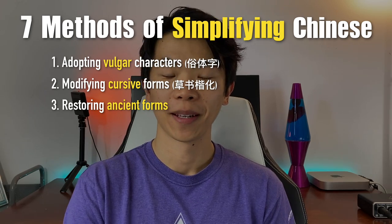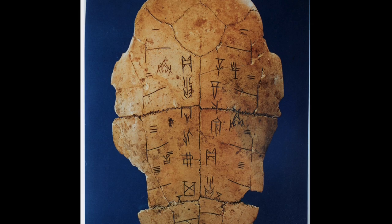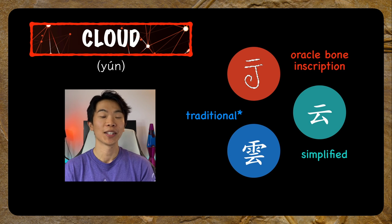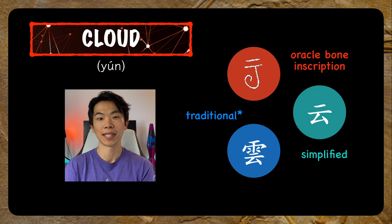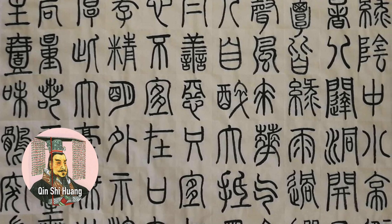The third method of simplifying Chinese is to simply take the ancient forms. This may sound ironic, until you realize that Chinese characters didn't just get simpler throughout history — sometimes they got harder. One such example is the 云 (cloud) character mentioned in the introduction. Even in the oracle bone inscriptions, the earliest form of Chinese characters that can be traced directly to modern Chinese, this character already existed and looks strikingly similar to the modern simplified version. The rain radical on top only started appearing around 200 BC when the small seal script was created under Qin Shi Huang.